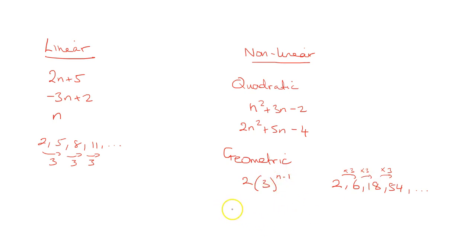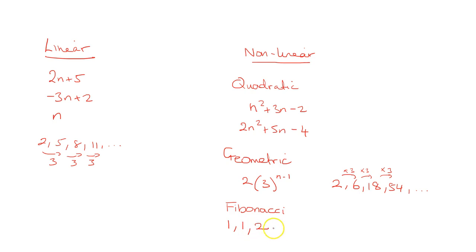The other type you should be familiar with is Fibonacci. With the Fibonacci sequence, each term is the sum of the two previous terms. So if we start with 1 and 1, the next term is 2 (1 plus 1), then 3 (1 plus 2), then 5, 8, 13, etc. Each term is the sum of the two before — so 5 plus 8 is 13, for example.